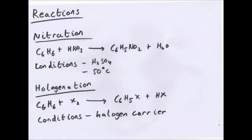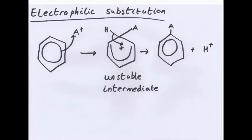Halogenation. Benzene plus any halogen becomes a halogenated form. Benzene chlorobenzene plus hydrochloric acid or hydrogen bromide. And conditions: it needs a halogen carrier, which we'll show later. Now these are examples of electrophilic substitution reactions.